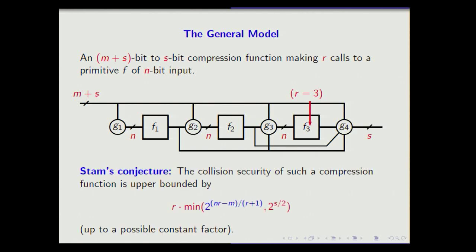There's a conjecture about the best possible collision resistance, since we know it's not always birthday. The conjecture says the collision resistance is the minimum of the birthday bound 2^(s/2) and a funny blue term involving r. When the blue term is less than the birthday term, you can never surpass the blue term. This was a conjecture by Stam, from Crypto 2008.